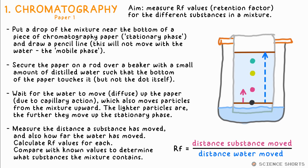We can then calculate the RF value — retention factor — by dividing the distance the solute moves by the distance the mobile phase, the water, moves. Both are measured from the pencil line. We can then compare these RF values with known values for different substances, which helps us identify what's in our mixture.